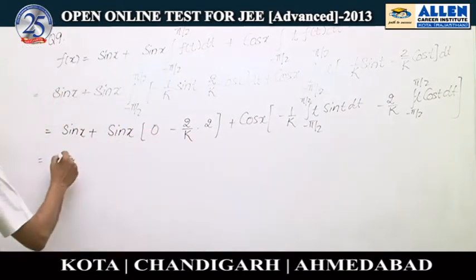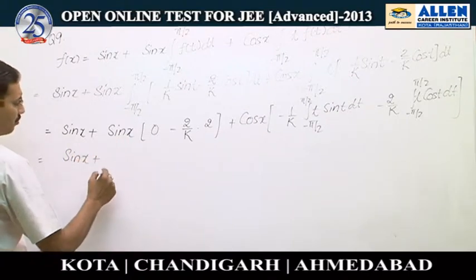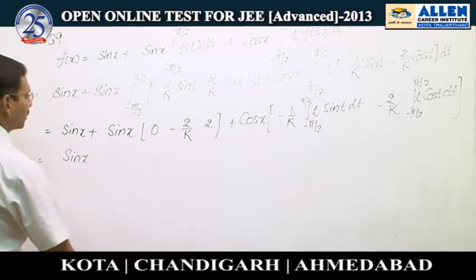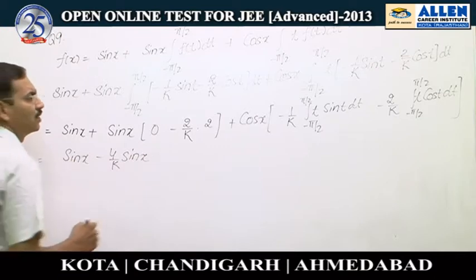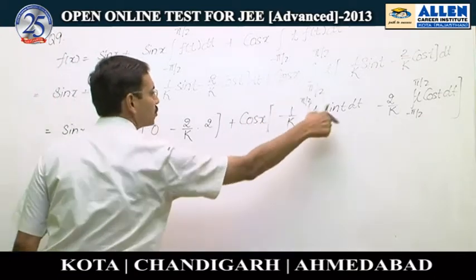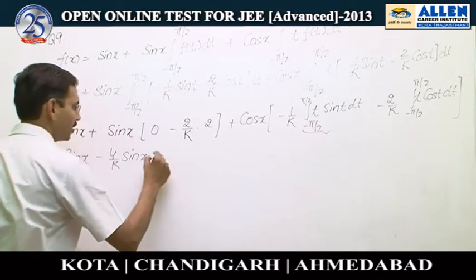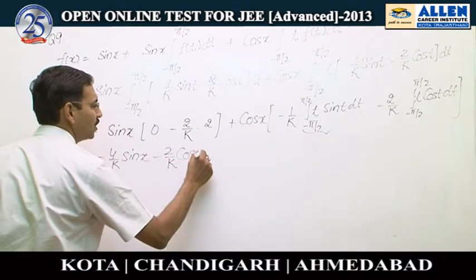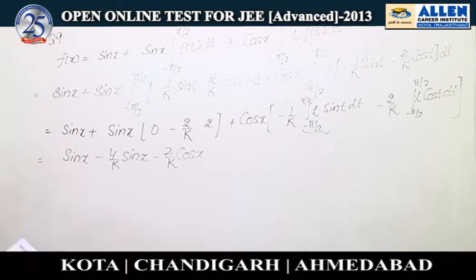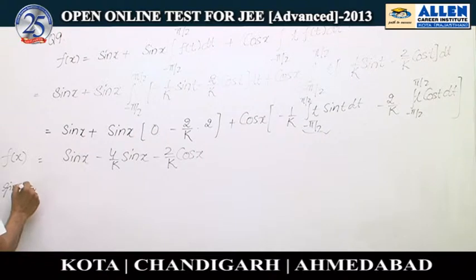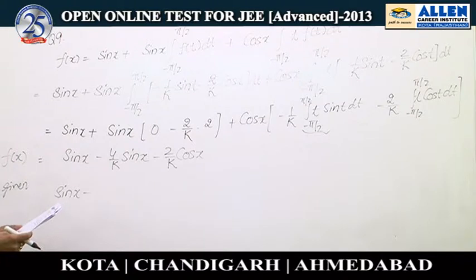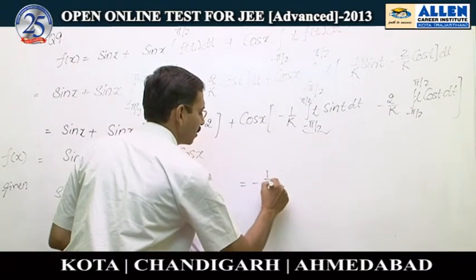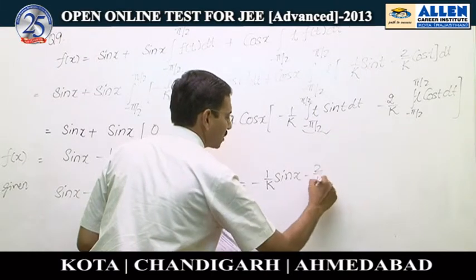So using that value — I hope you can calculate it — it gives minus 4 upon k times sin x, then minus 2 upon k times 2, giving minus 2 upon k times cos x, and the other term is 0. This is f(x), and as given, f(x) equals minus 1 upon k times sin x minus 2 upon k times cos x.